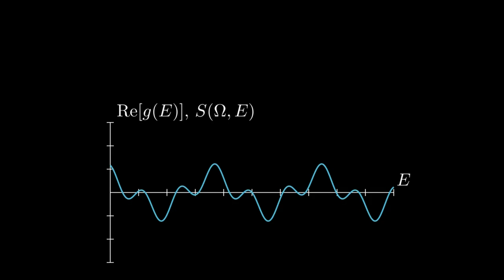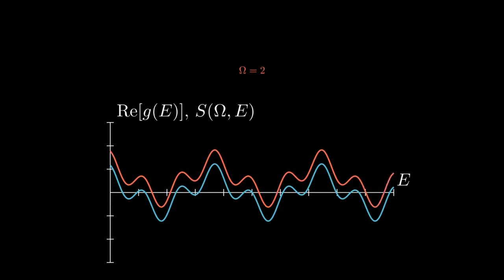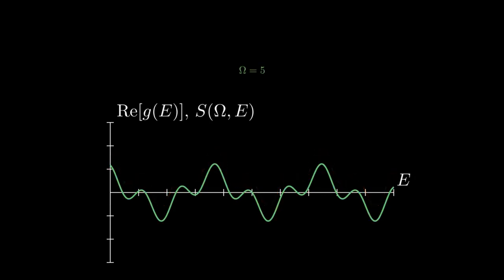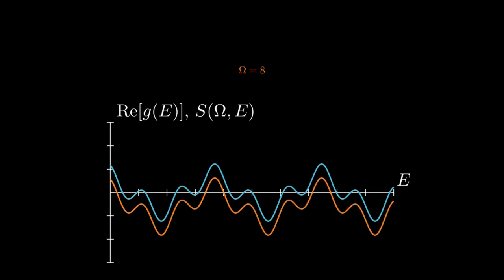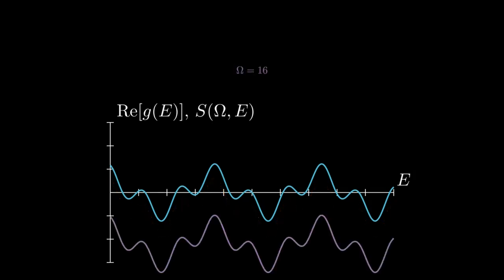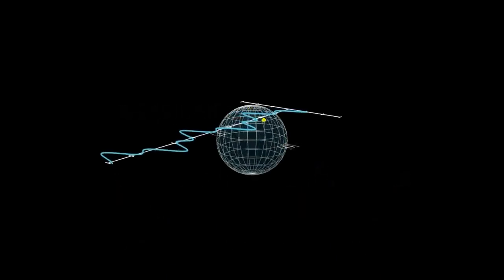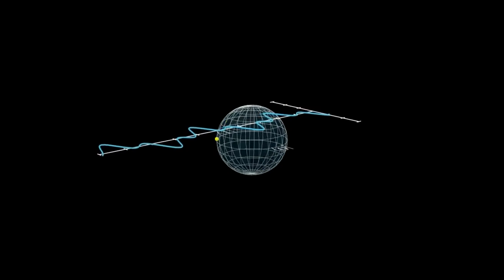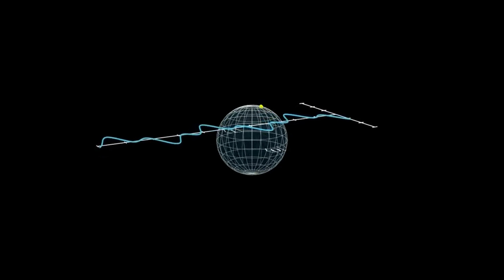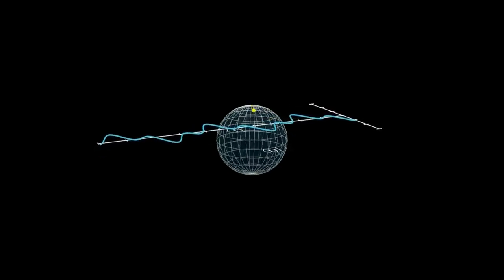H is the Hamiltonian and J is the bare tunneling between two energy levels. Since H is periodic in time, we can naturally represent it via Floquet theory. Omega represents the driving frequency. We can observe changes to the graph when we drive the qubit at different frequencies. When the evolution of the Floquet quasi-states are frozen, we have driven at an argument that is a zero of the zeta function.